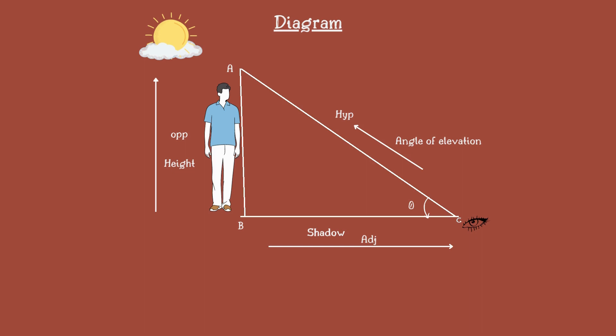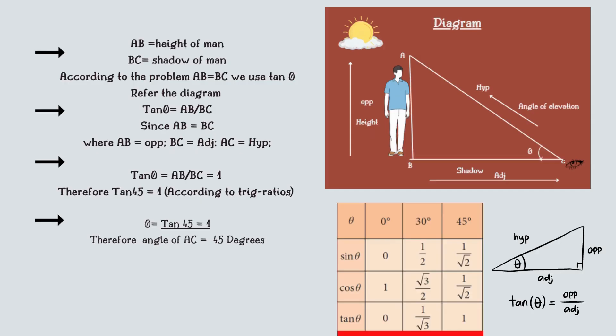It means, by the given problem, we have to take tan theta where tan is represented as opposite side by adjacent side. Since AB equals BC, please refer to diagrams in right side. Therefore tan theta equals AB by BC. So tan theta equals 1, since AB and BC is equal to 1. That implies tan theta equals 1 is 45, which is according to trigonometry ratios. The angle of AC is 45 degrees.